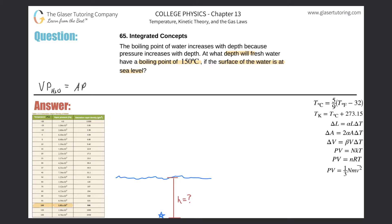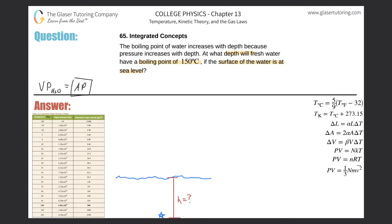I was using the words 'atmospheric pressure' before, which is totally correct because we were dealing with problems in the atmosphere, not underwater. But a better and more general idea to understand is this: whenever the vapor pressure of water equals the absolute pressure, we can find the boiling point.